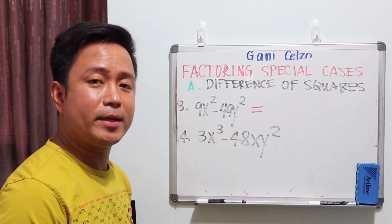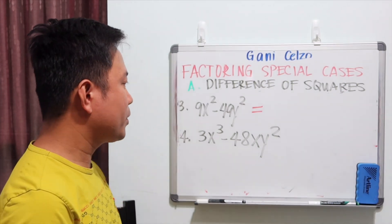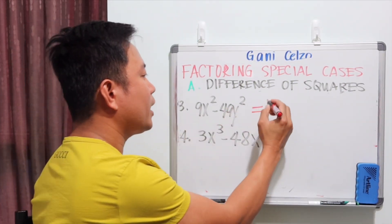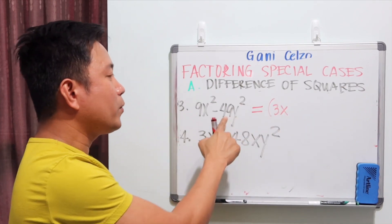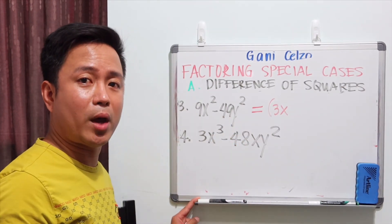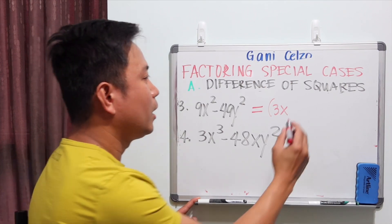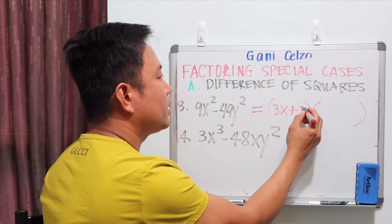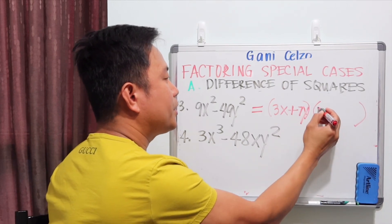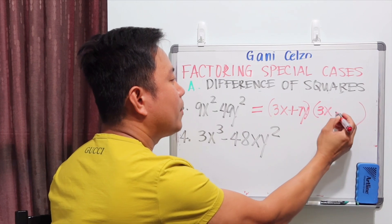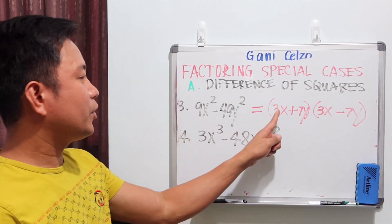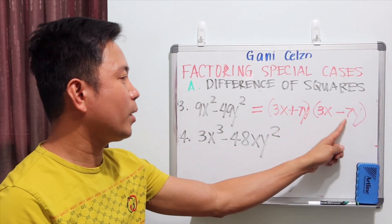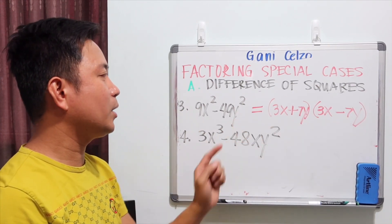For example 3, 9x² is a perfect square: (3x)². And 49y² is also a perfect square: (7y)². So we can write the final answer as (3x + 7y)(3x - 7y). Checking: 3x times 3x is 9x², and 7y times -7y is -49y².